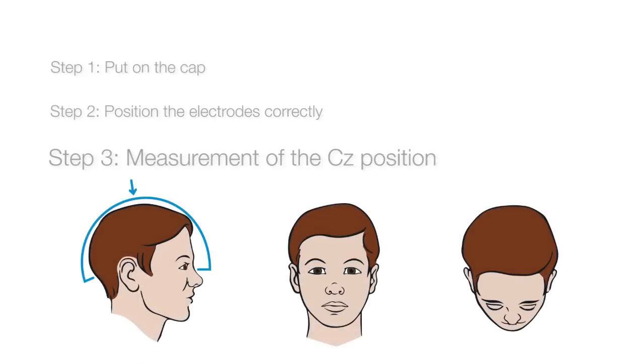Take the point halfway between the nasion and inion and the point halfway between the two pre-articular points. The vertex electrode, Cz, is positioned where these two points meet.